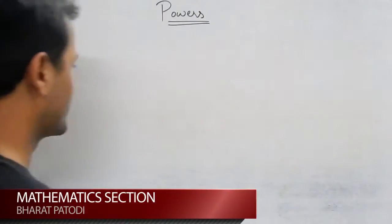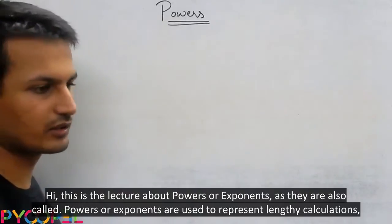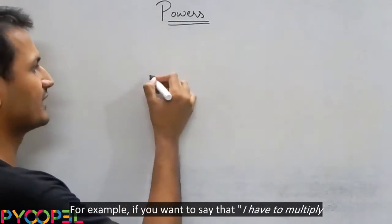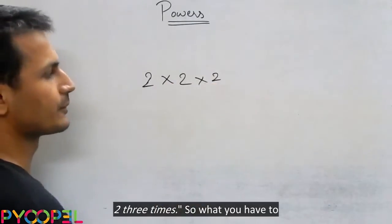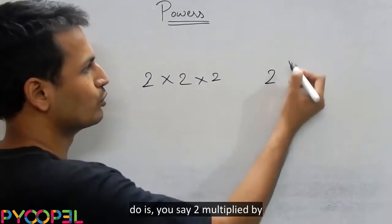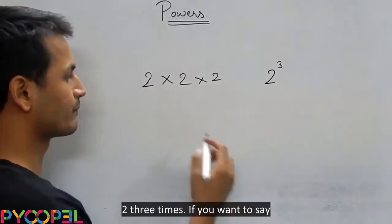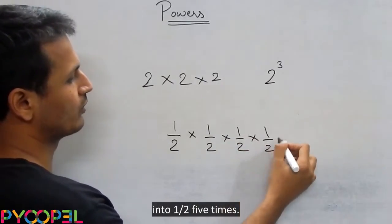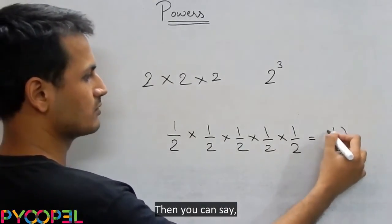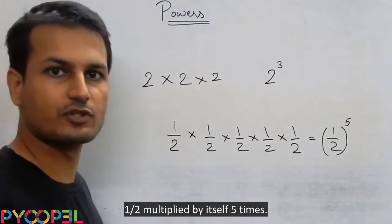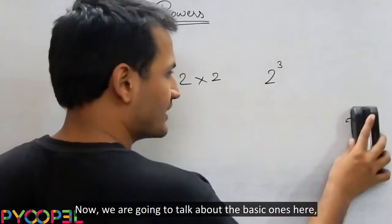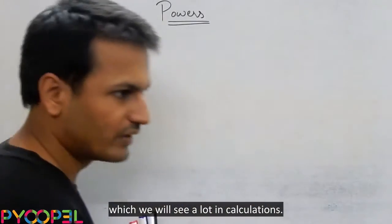This is the lecture about powers or exponents as they are also called. Powers or exponents are used to represent lengthy calculations, like when you are multiplying one number by itself again and again, in a very simplified form. For example, if you want to say that you have to multiply 2 three times, or multiply one-half by itself five times, that is powers or exponents. We are going to talk about the basic ones here, which we will see a lot in calculations.